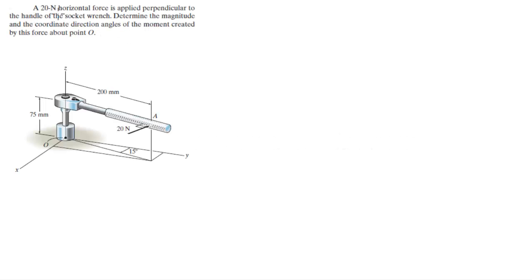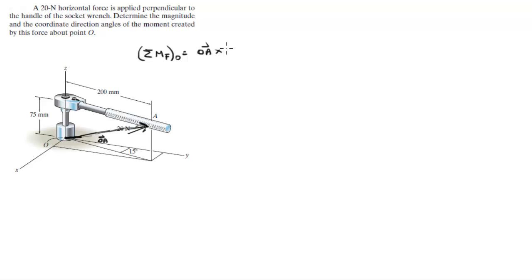A 20 Newton horizontal force is applied perpendicular to the handle of the socket wrench. Determine the magnitude and the coordinate direction angles of the moment created by this force about point O. To solve this, we need to find vector OA, and then the moment that F creates about O is equal to the cross product of OA cross F, where F has a magnitude of 20 Newtons.